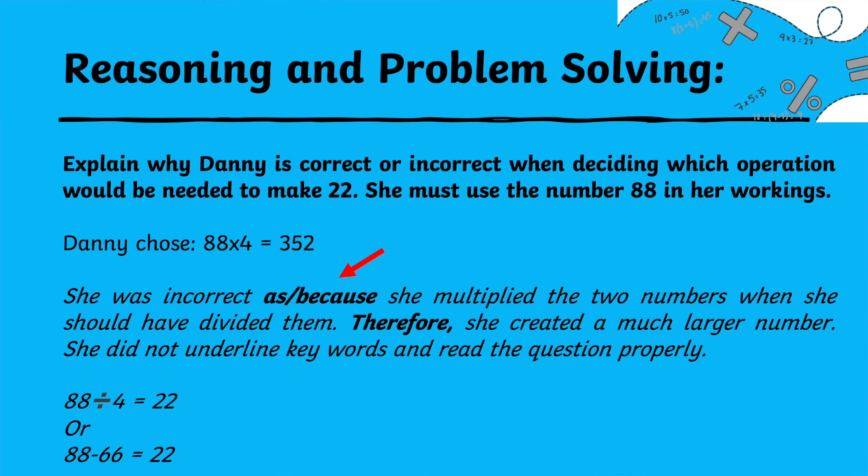Reasoning in mathematics when children problem solve is another key moment where the language of cause and effect will be relevant — proving and disproving. For example, Dani was incorrect because she multiplied the two numbers where actually she should have divided them, and this would have provided her with the correct number.